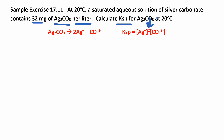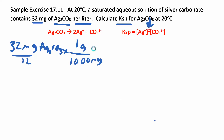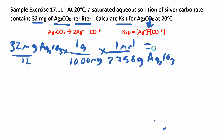The solubility is given as 32 mg/L, so let's convert to moles per liter. We know there are 1000 milligrams in one gram, and the molar mass of silver carbonate is 275.8 g/mol. That gives us 1.16 × 10⁻⁴ mol/L — that's our molar solubility, how many moles of silver carbonate dissolve per liter.